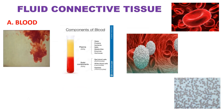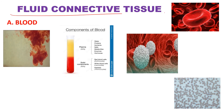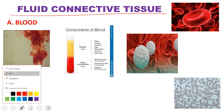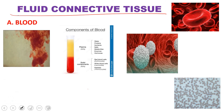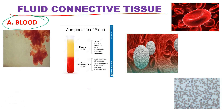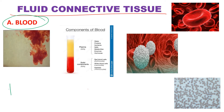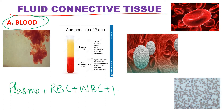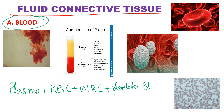Let us study about the fluid connective tissue. Under this we have blood. So first we are going to study about the blood. Blood consists of plasma, RBC, WBC plus platelets.